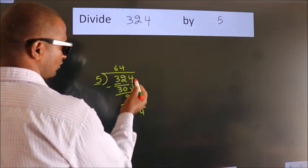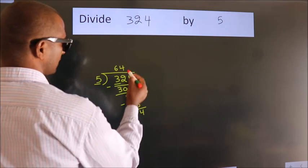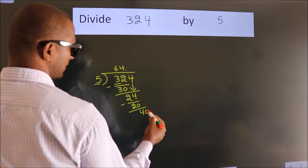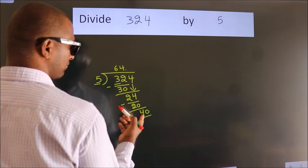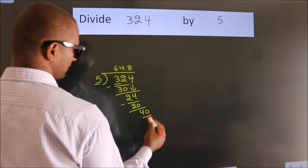After this, no more numbers to bring it down. So what we do is, we put a dot and take 0. So 40. When do we get 40 in the 5 table? 5 times 8 is 40.